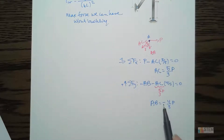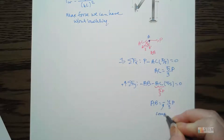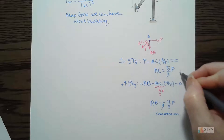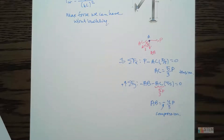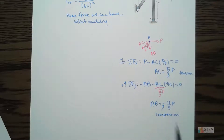The negative indicates compression, the positive for AC indicates tension. So now we've got the relationship between the force in the member AB and the applied force P.